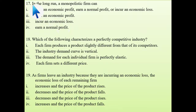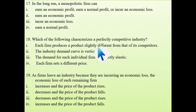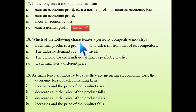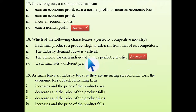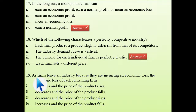Seventeenth question: in the long run, a monopolistic firm can earn which kind of profit? In the long run, always normal profit occurs — so the answer is earn a normal profit. Eighteenth question: which of the following characterizes a perfectly competitive industry? The answer is that the demand for each individual firm is perfectly elastic, because we know demand is perfectly elastic in a perfect competitive market.